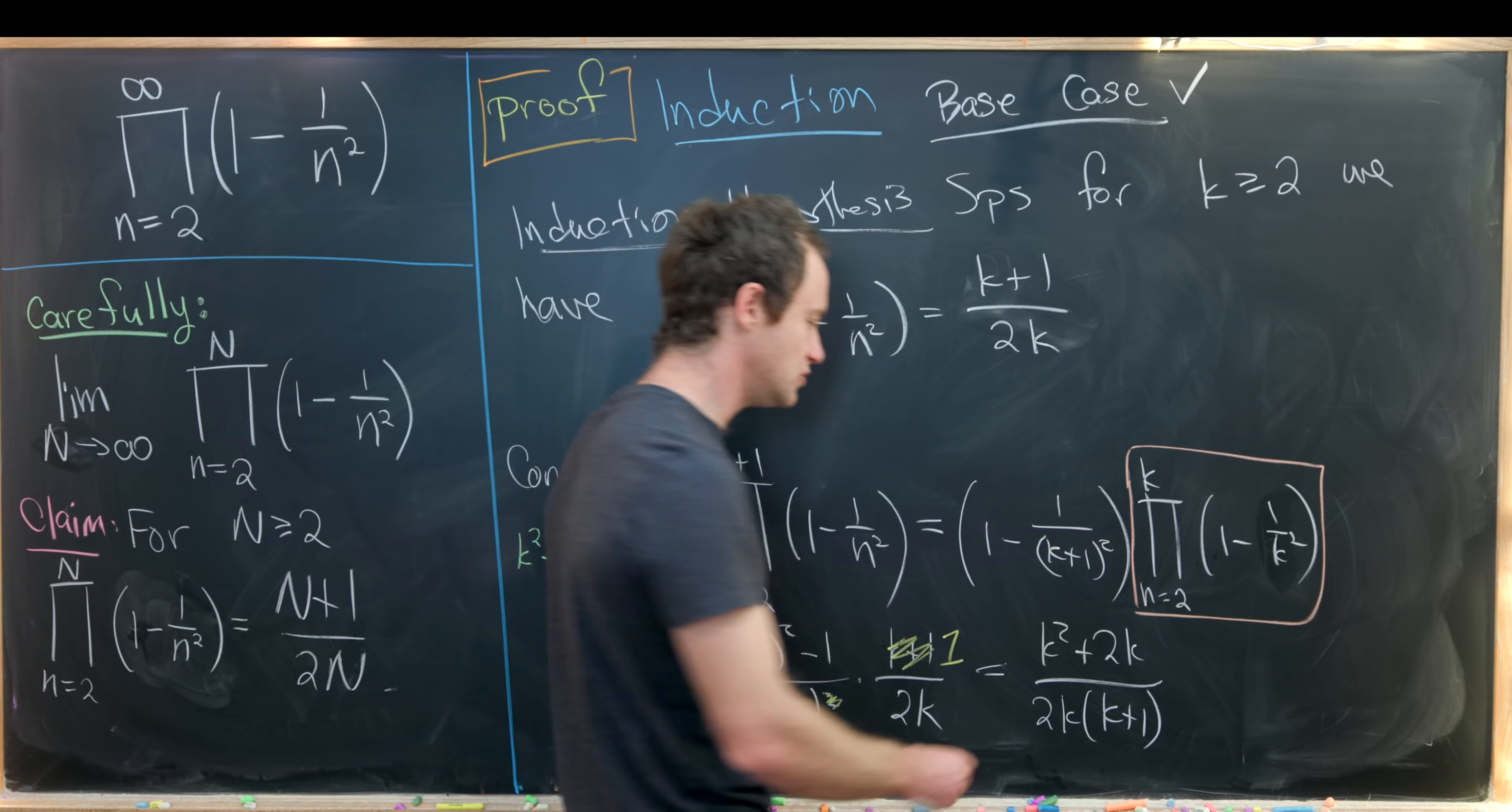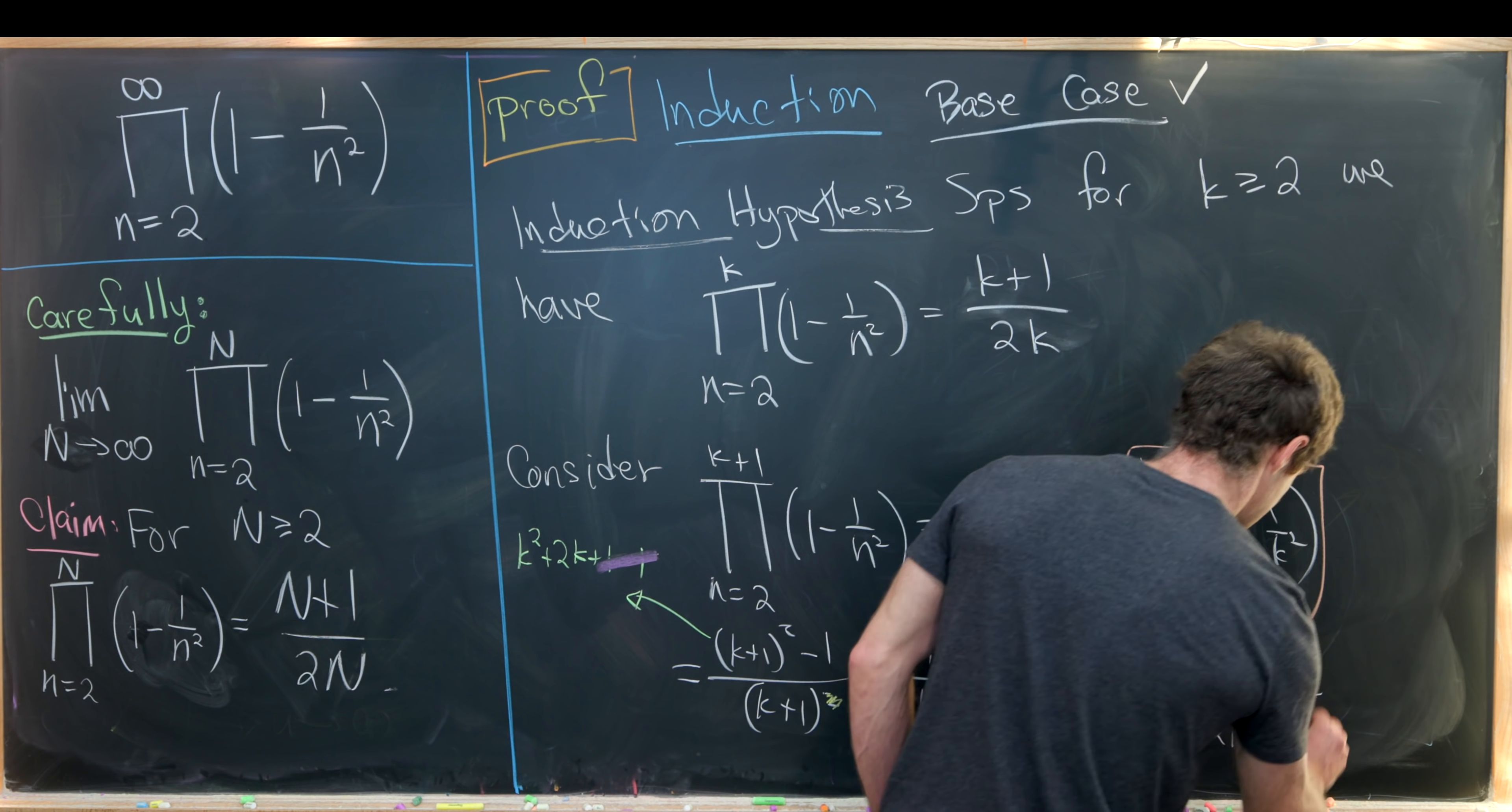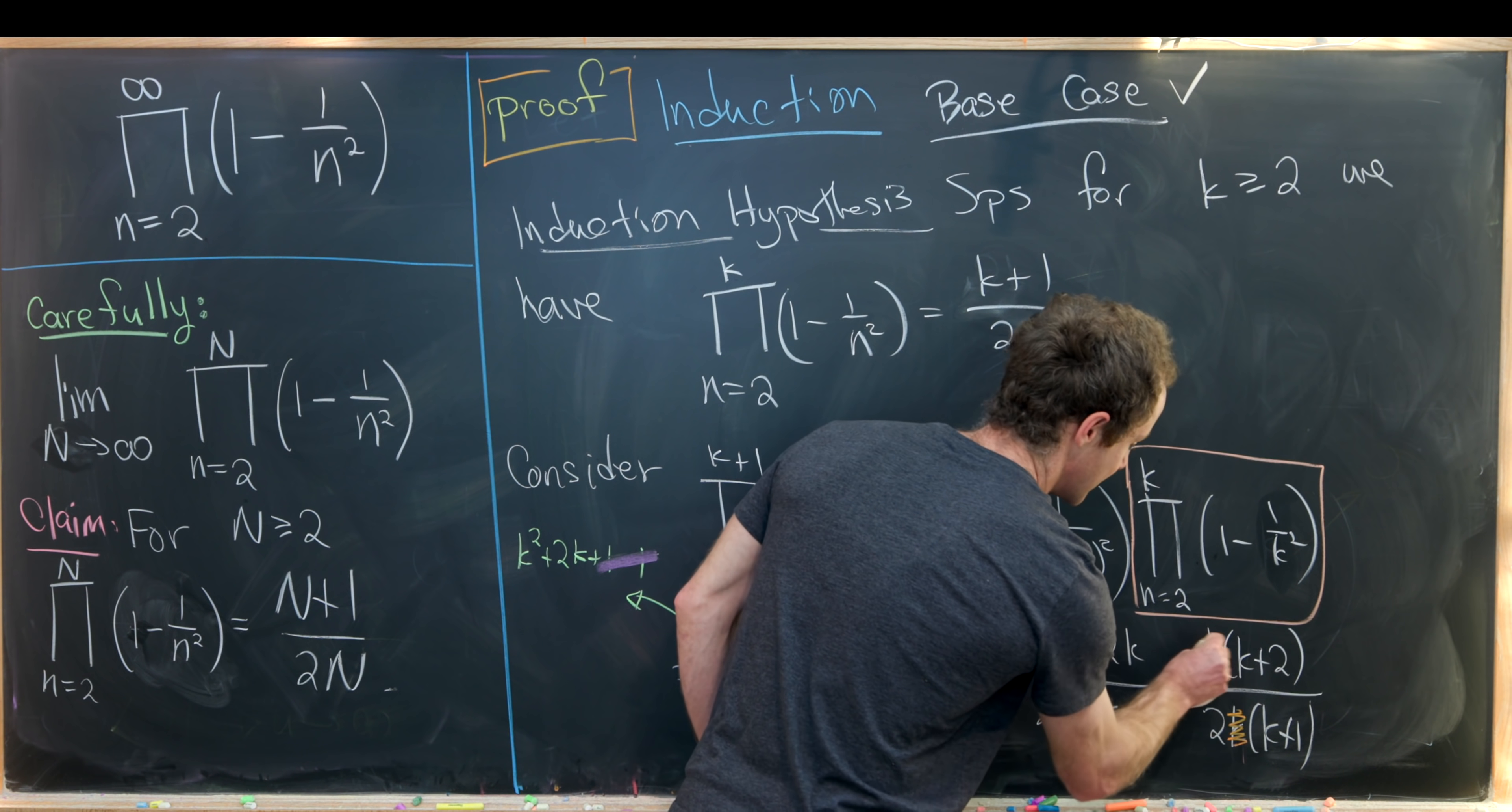So that leaves us with k squared plus 2 times k over 2 times k times k plus 1. But let's notice that this numerator factors quite nicely. It factors as k times k plus 2. And then we have 2 times k times k plus 1 in the denominator.